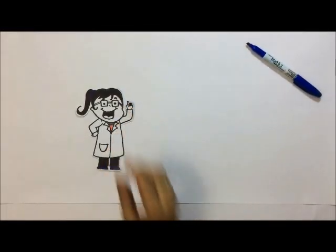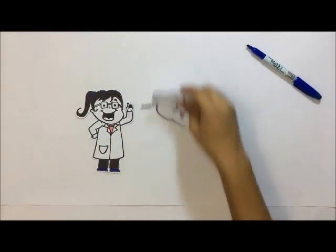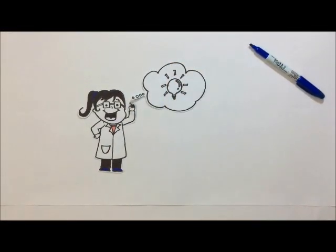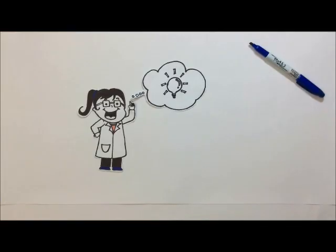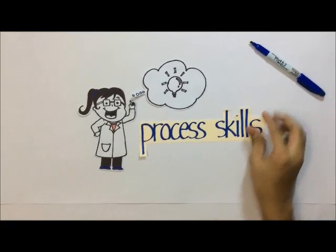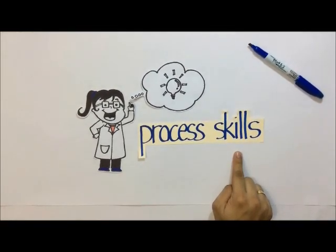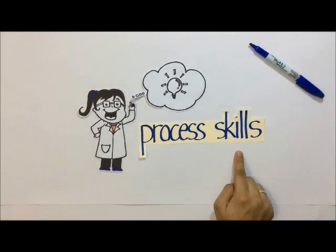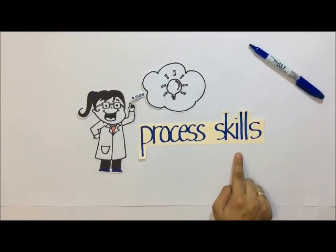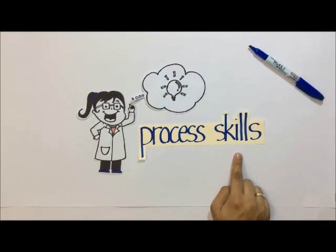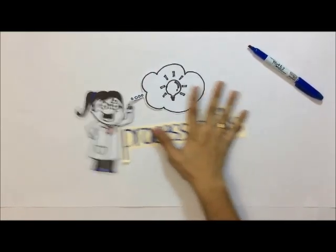Do you know how scientists study things? They make use of what we call process skills. Process skills are different ways on how to study objects. Today we are going to learn one process skill.